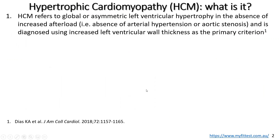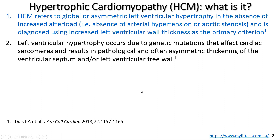So first of all, what is hypertrophic cardiomyopathy? This refers to global or asymmetric left ventricular hypertrophy in the absence of increased afterload — that is, in the absence of arterial hypertension or aortic stenosis, for example. It's diagnosed using increased left ventricular wall thickness as the primary criterion. Left ventricular hypertrophy occurs mainly due to genetic mutations that affect cardiac sarcomeres, resulting in pathological and often asymmetric thickening of the ventricular septum and/or left ventricular free wall.